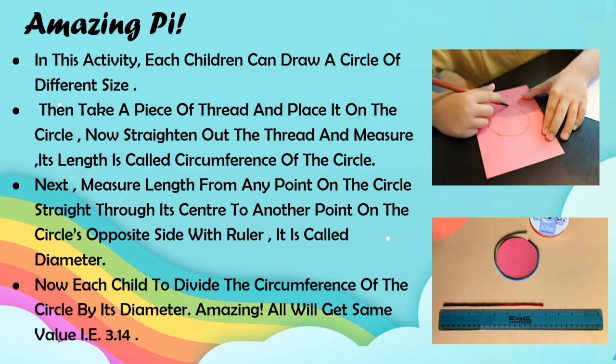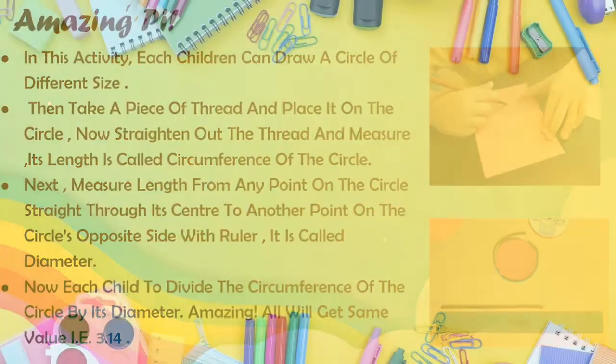Now, ask each child to divide the circumference of the circle by its diameter. Amazing! All will get the same value — that is 3.14.